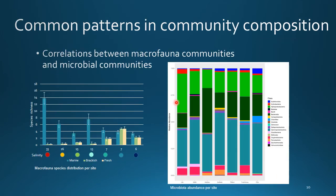Lastly, I want to give you a sneak peek into my fresh-out-of-the-sequencer data of microbial communities in the Baltic Sea. It still needs some analysis, but as we did with our macrofauna data, we see changes in community composition — from more marine species in our most saline sites towards more freshwater species at our low salinity sites.